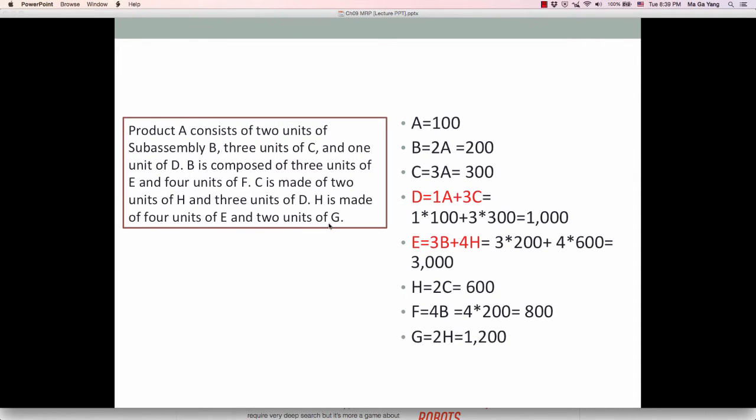Finally, G equals 2 units of, H is 2 units of G. So G equals 2H, which is 2 times 600, which is 1200. So if we know the end item A, the number of end item A, then you can calculate subassemblies and parts. Caution needs to be paid on those D and E, which can be used more than once.